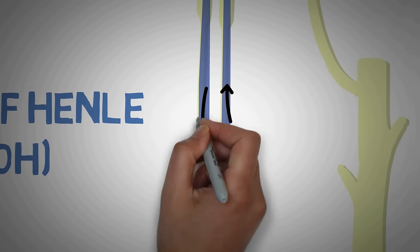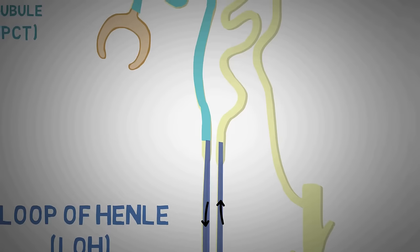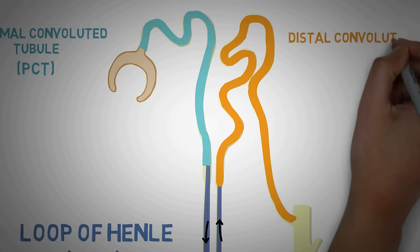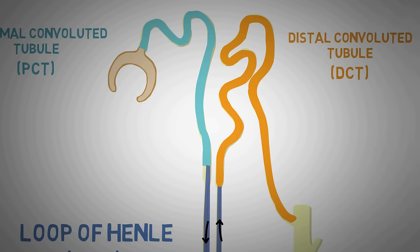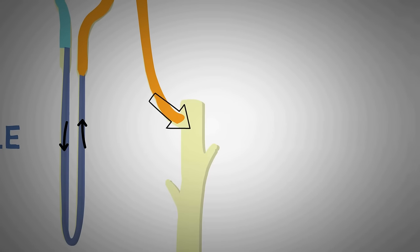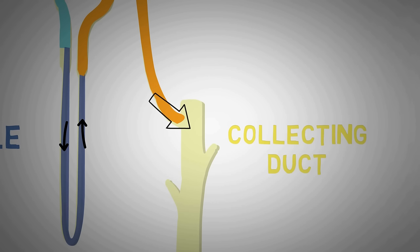The loop of Henle has a descending limb and an ascending limb. The ascending limb leads into the distal convoluted tubule — distal meaning away, since it is located far from the Bowman's capsule, and convoluted since it is also a folded structure. The distal convoluted tubule drains into the collecting duct, which also receives input from many other nephrons. The collecting duct drains into larger collecting ducts and ultimately into the renal pelvis, connected to the ureter, which drains the kidney to the bladder. The distal convoluted tubule is also located in the cortex of the kidney.